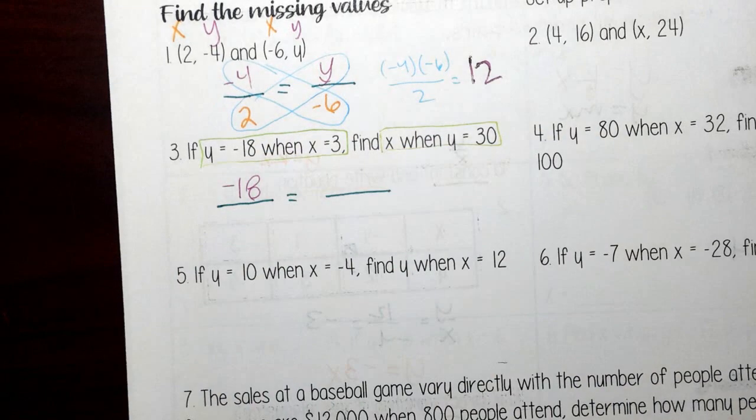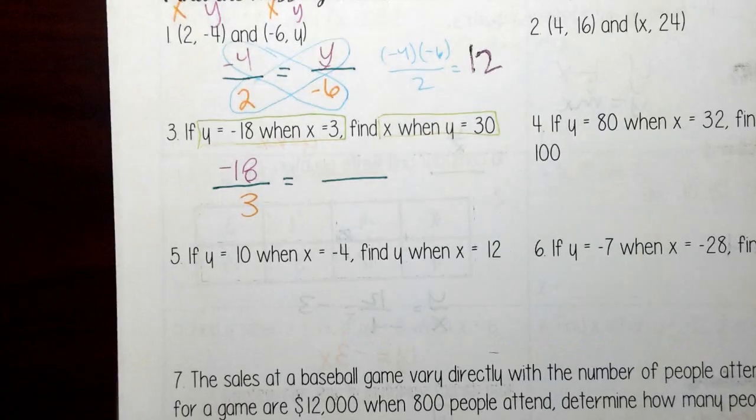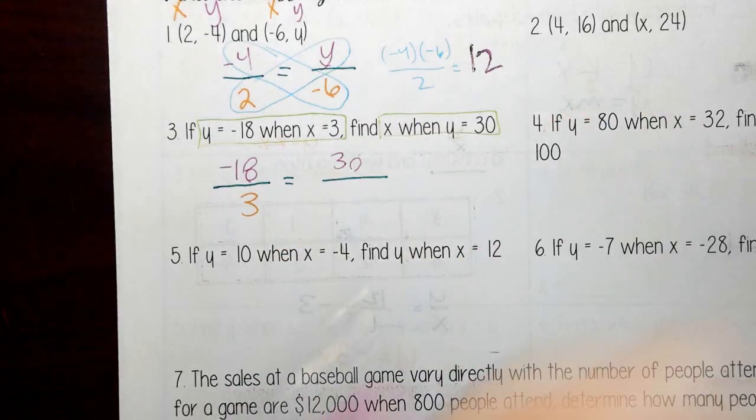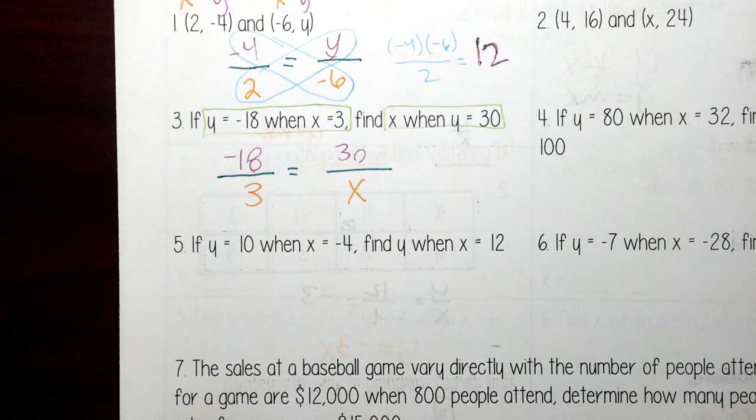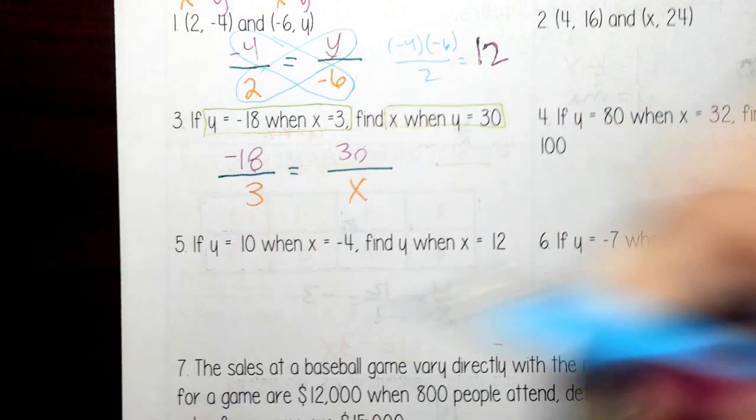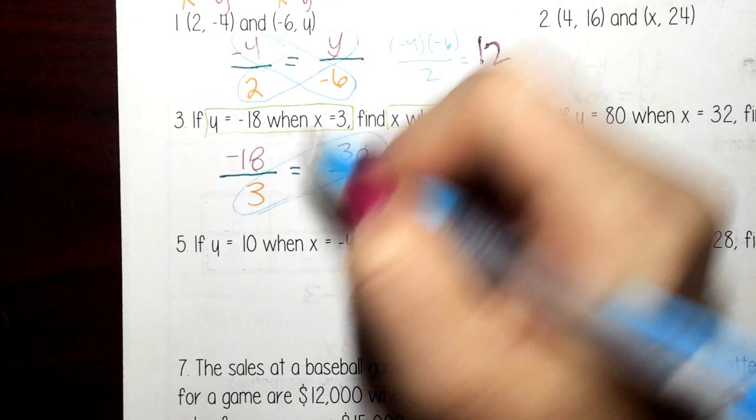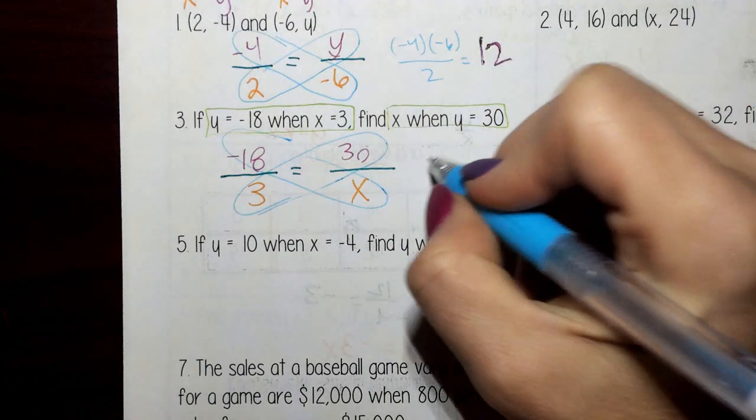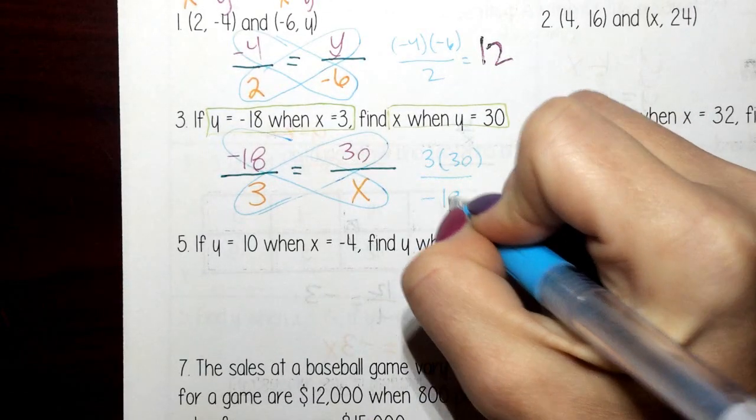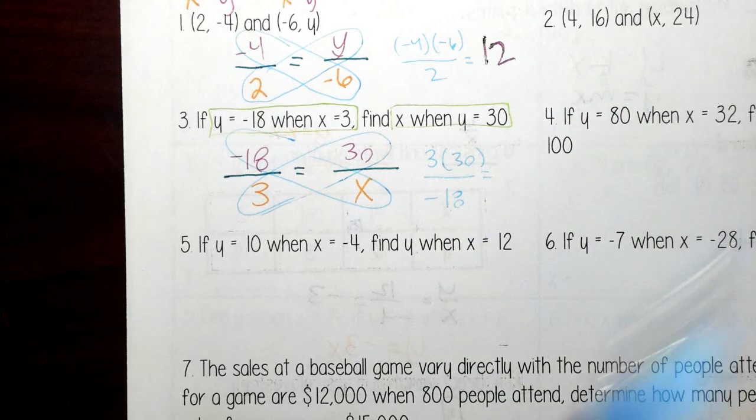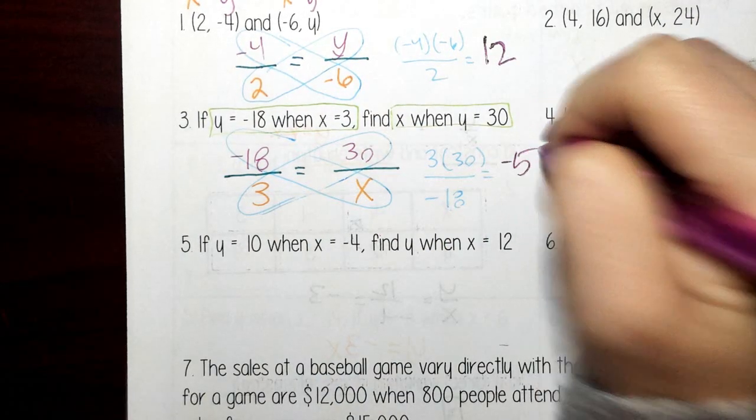So y is negative 18 when x is 3, y is 30 when x is, we don't know. So we want to cross multiply and divide. So we've got 3 times 30 divided by negative 18. x here is negative 5.